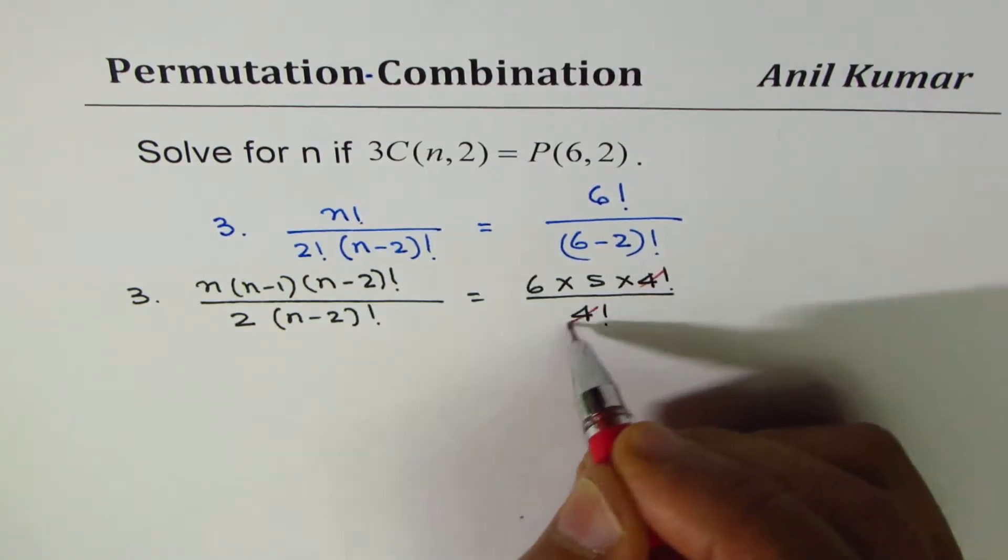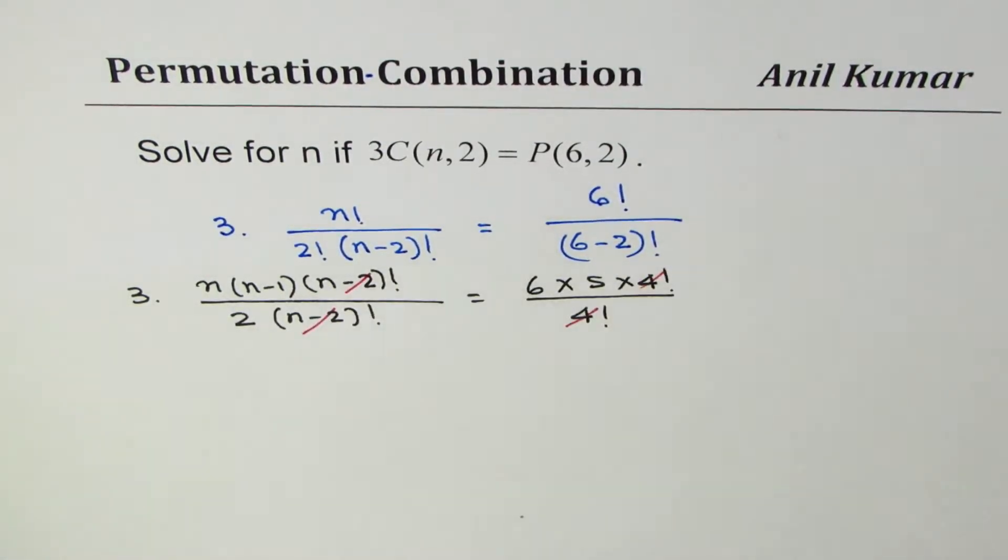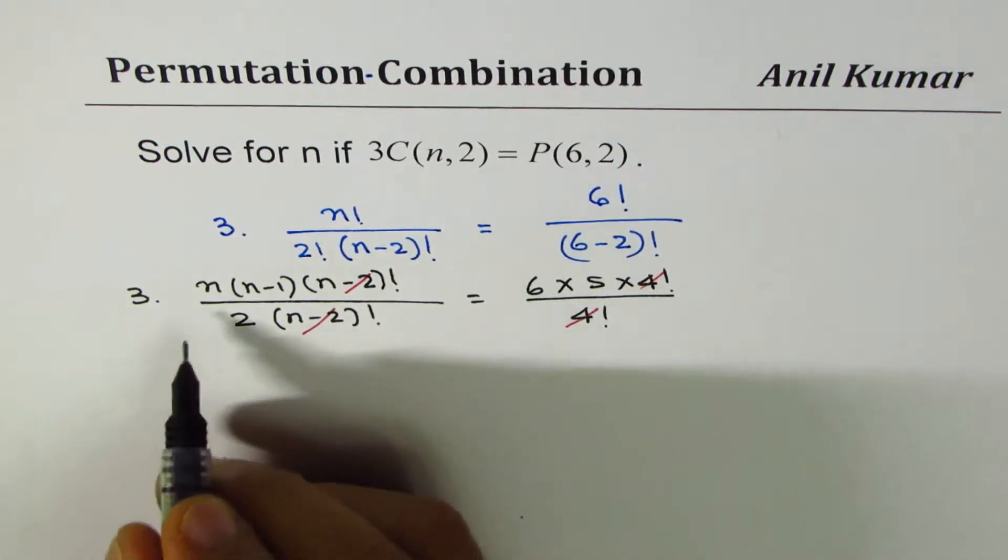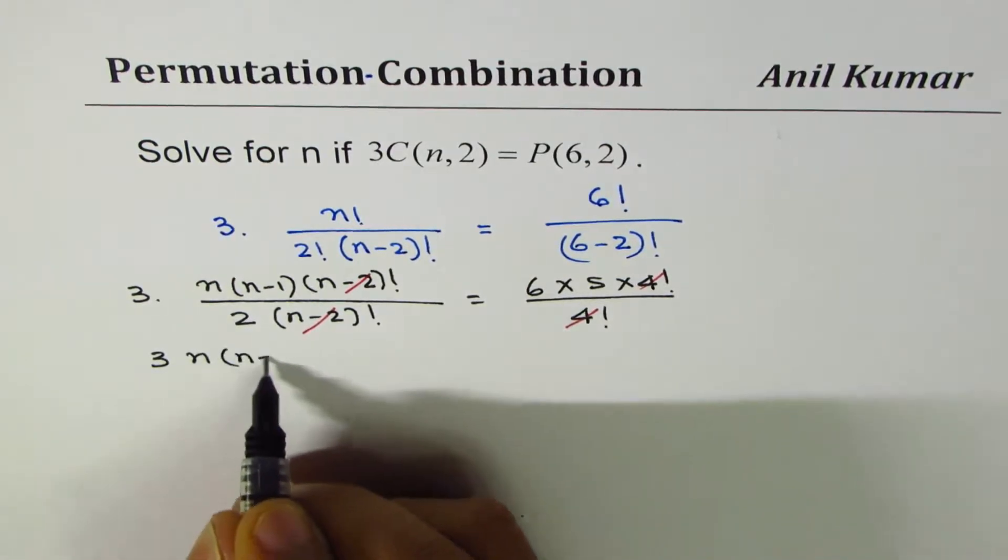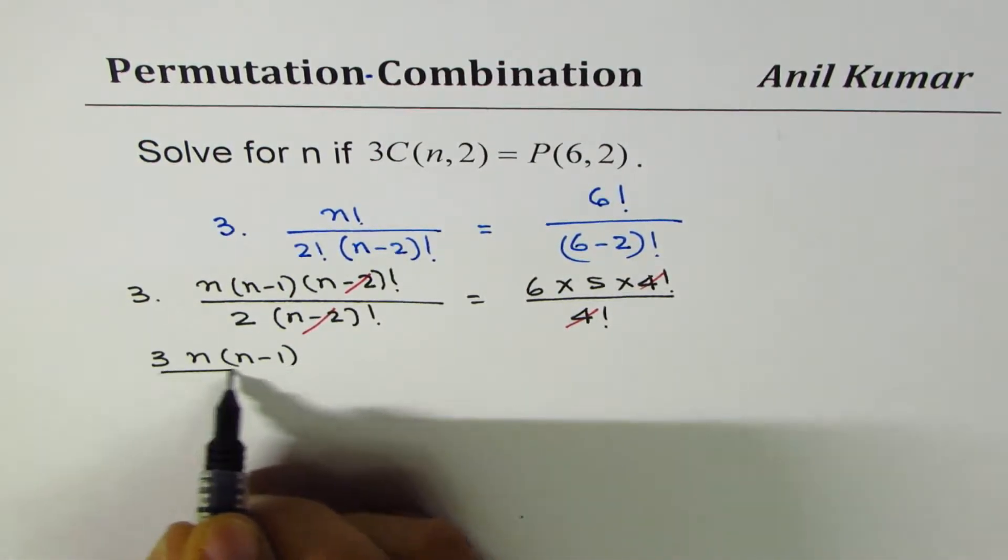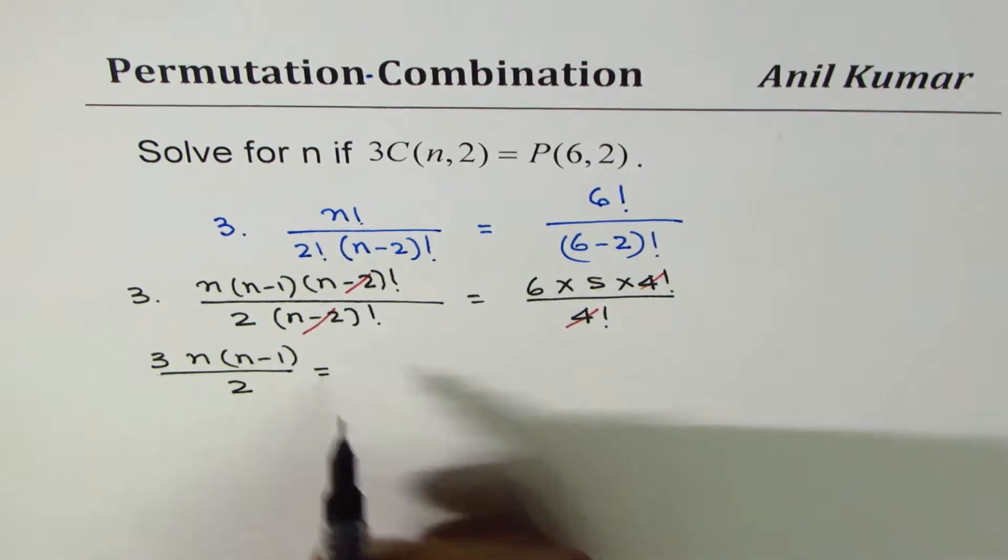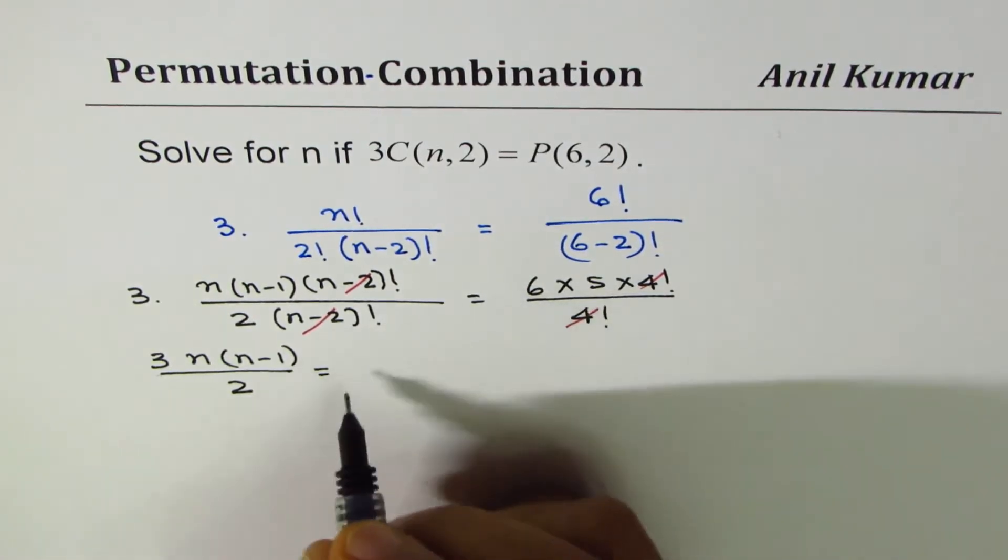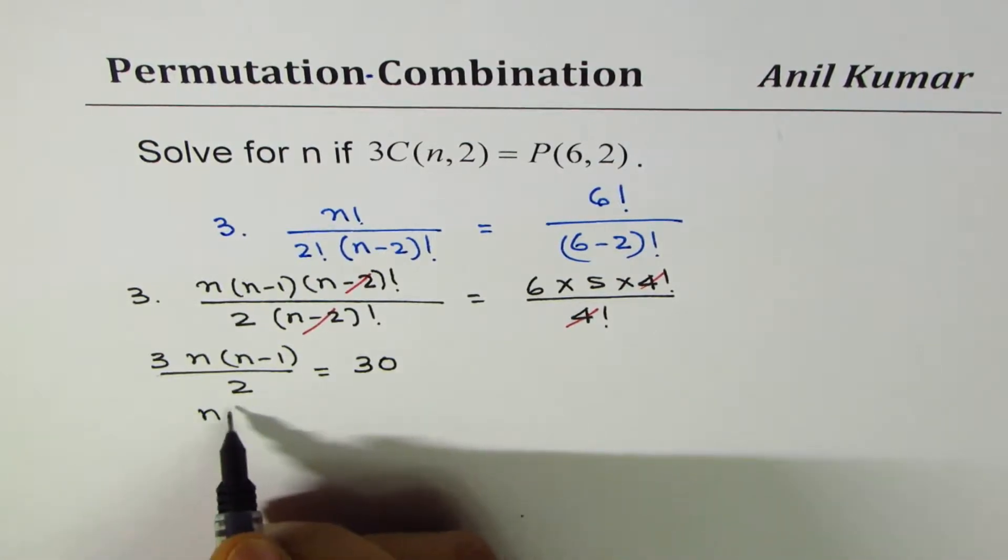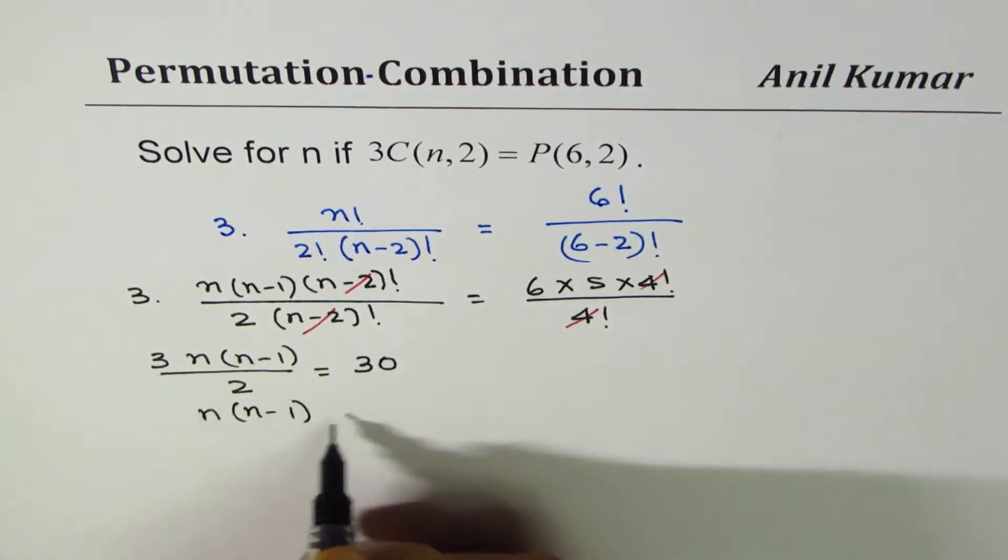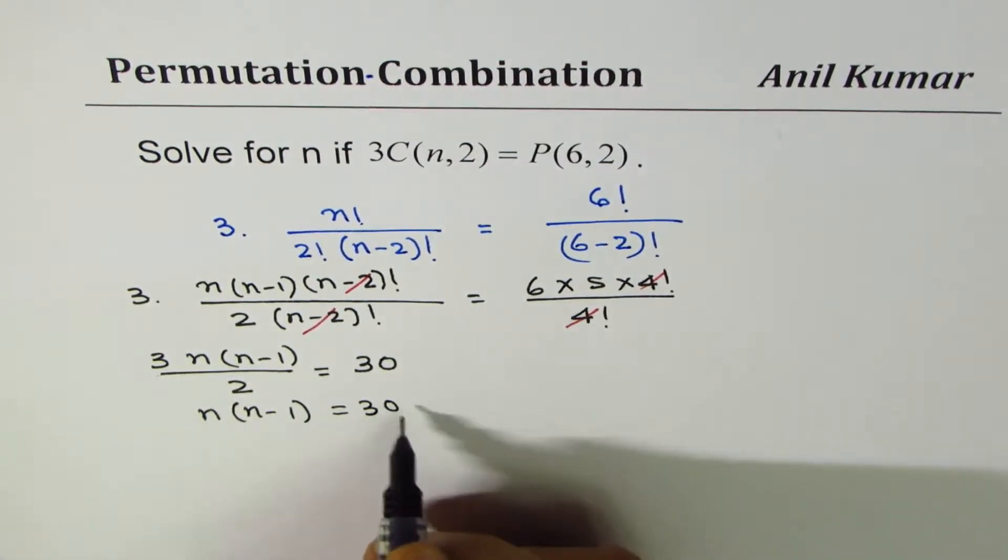Now we can cancel 4 factorial and (n-2) factorial. What we get here is 3 times n times (n-1) divided by 2 equals 6 times 5 which is 30. So we can write this as n(n-1) equals 30 times 2 over 3, which is 20.